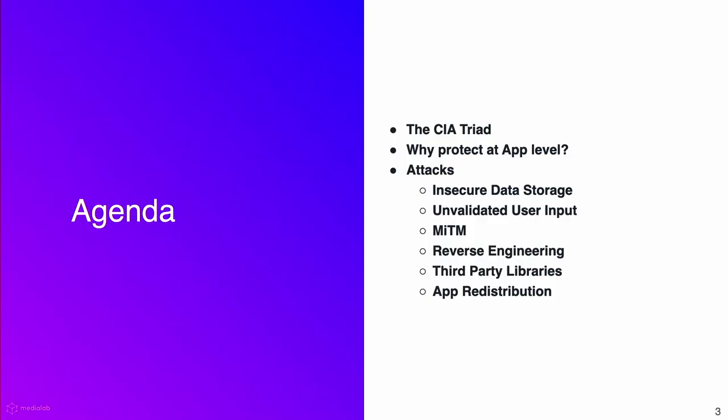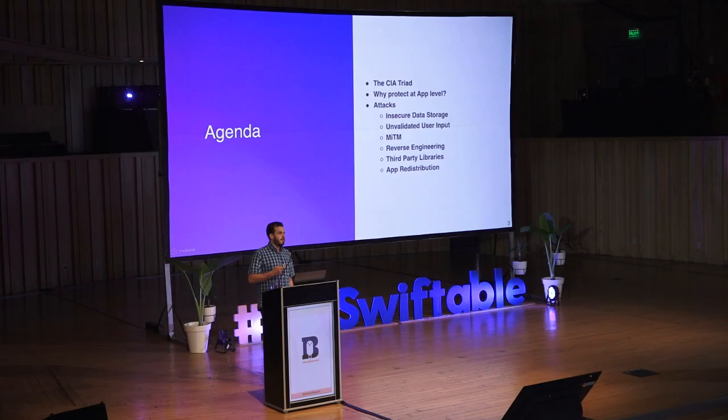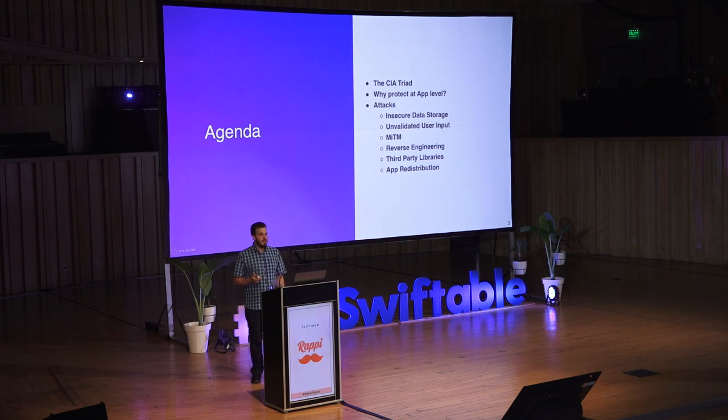In this talk, I'm going to talk about some concepts of security and why we should take measures at the application level. After this, we will see some attacks on iOS and how to take measures around them. This includes insecure data storage, unvalidated user input, man-in-the-middle attacks, reverse engineering, the dangers of third-party libraries, and app redistribution.